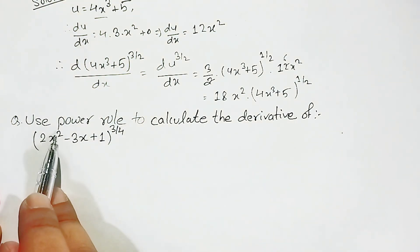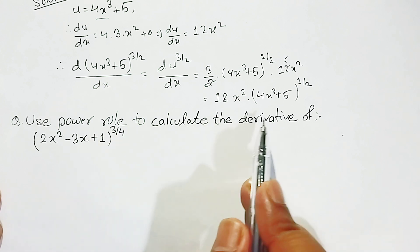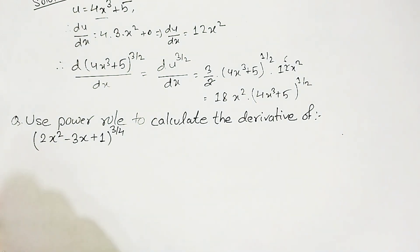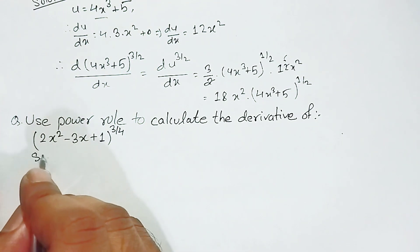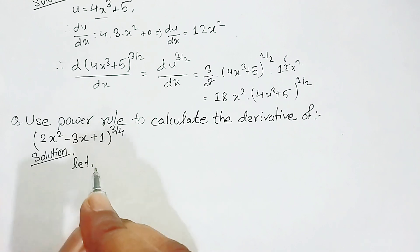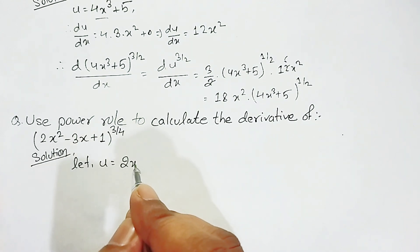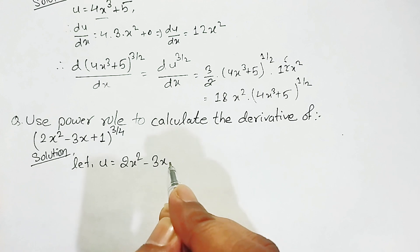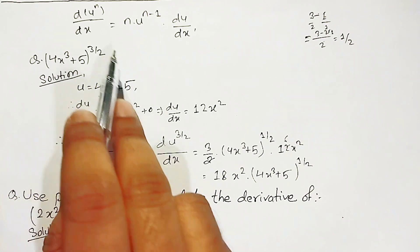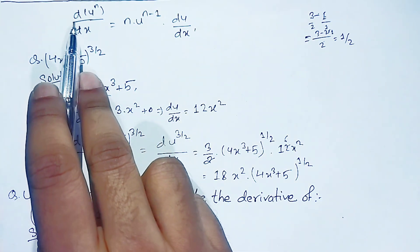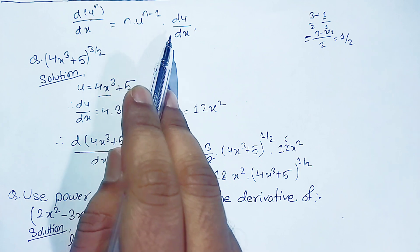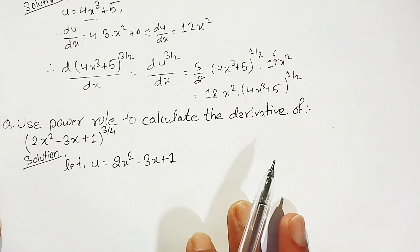The second question asks us to use the power rule to calculate the derivative of (2x² - 3x + 1) to the power 3/4. We assume u equals 2x² - 3x + 1. The power rule formula is: derivative of u to the power n equals n times u to the power n minus 1, times du upon dx.